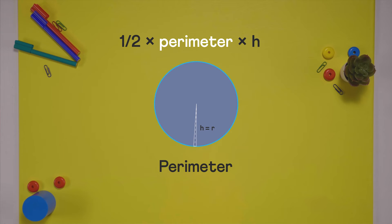Now, at this point, the height of each triangle will equal the radius of the circle and the perimeter of this polygon will be equal to the circle, which is 2 pi r.